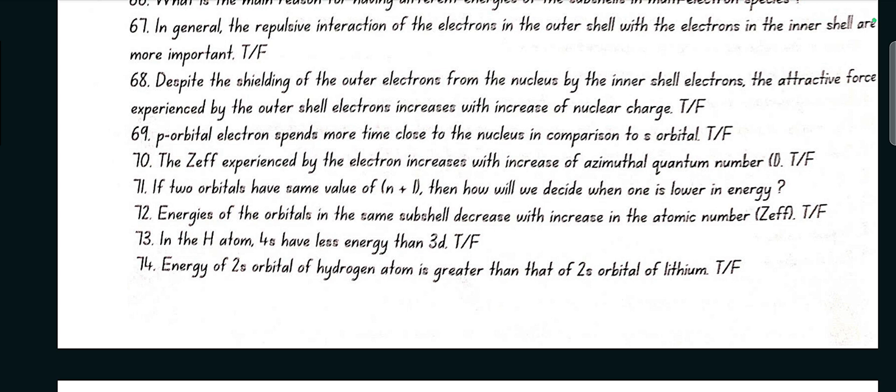P orbital electrons spend more time close to the nucleus in comparison to the s orbital? No, false. The effective charge experienced by the electron increases with increase in azimuthal quantum number? No, false. If two orbitals have same value of n plus l, then how will we decide which one is of lower energy? The one with lower value of n will have lower energy. Energies of the orbitals in the same subshell decrease with increase in atomic number? Yes, true.